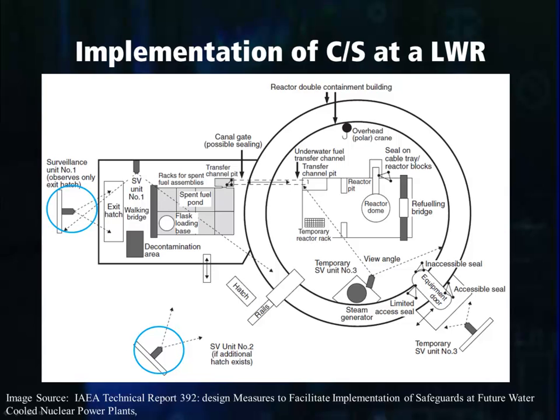An additional containment and surveillance mechanism utilized at this facility is the seal, or the TID. You can see in the spent fuel pond there is a canal that connects the pond to the reactor pool. This canal is there to allow the operator to remove fuel from the reactor core and place it in the spent fuel pond. The IAEA will typically place a seal on the canal gate, which allows the IAEA to know whether or not fuel has been removed from the reactor core and moved to the spent fuel pond.